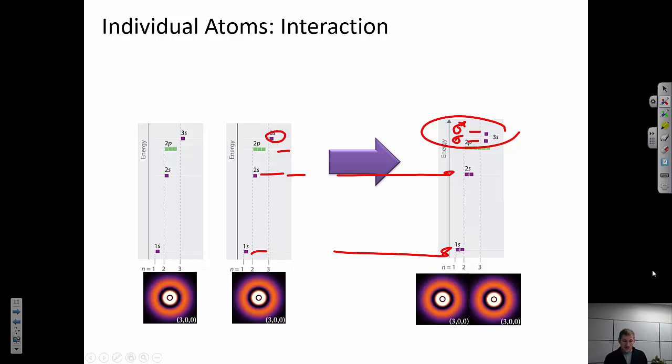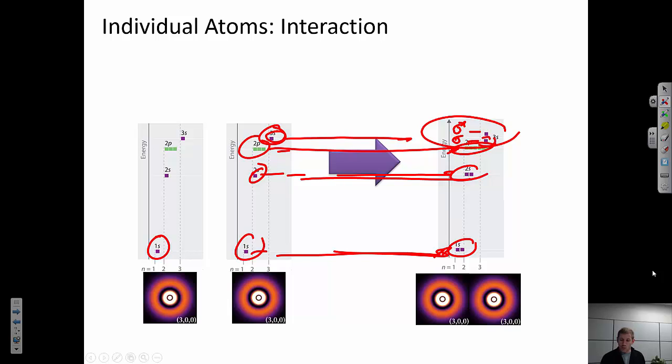So a couple things to notice here. If we start off, the total number of orbitals that we start off with has to equal the total number that we end up with. So we have two atoms. They each have one 1s orbital. And the resultant combination is going to give us two 1s orbitals. Same thing for the 2s. Same thing for the 2p. They each have three orbitals initially, and we end up with six. And finally for the 3s, we have two individual 3s orbitals. And they split, so I have one orbital at a higher level and one at a lower level.